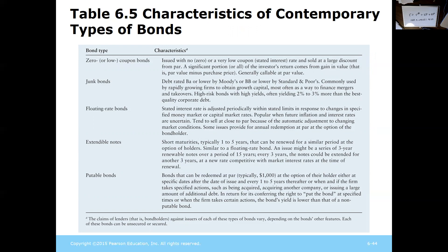There are several types of bonds. Zero coupon bonds have a very low interest rate and sell at a discount from par — the investor's return comes from a gain in value as the bond approaches maturity, bought at a discount and repaid at face value. Junk bonds have poor ratings and are often used by riskier growing companies to obtain capital. Floating rate bonds have changing interest rates depending on market conditions. Extendable notes allow you to lengthen the time to repayment. Putable bonds can be redeemed at par at specific dates or transferred into other debt.